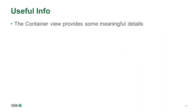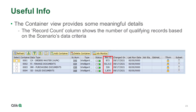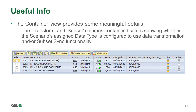The container view of the Export Control screen provides the user some potentially meaningful details. The Scenario Number column allows the user to navigate to the data selection screen where the user's criteria can be displayed or even changed. The Record Count column shows the number of qualifying records based on the scenario's data criteria — the user may determine that the number of records is too high or too low and may need to update their selection criteria accordingly. The Transform and Subset columns contain indicators showing whether the scenario's assigned data type is configured to use data transformation and/or subset sync functionality. If the indicator is on, then the corresponding configuration has been defined and will be applied during the export process.